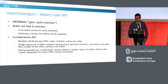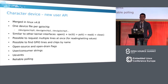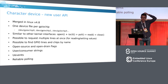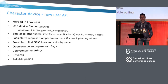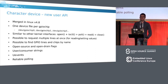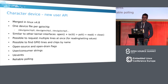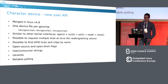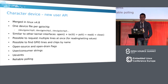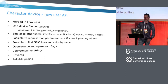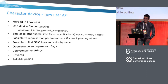A new interface was finally merged in Linux v4.8. It's a bit similar to how the I2C user space interface works. Now we have a single character device for every GPIO chip, which lives in /dev. To interact with GPIOs you only need a set of system calls: open, ioctl, poll, read, and close. This interface brings in a lot of new features.